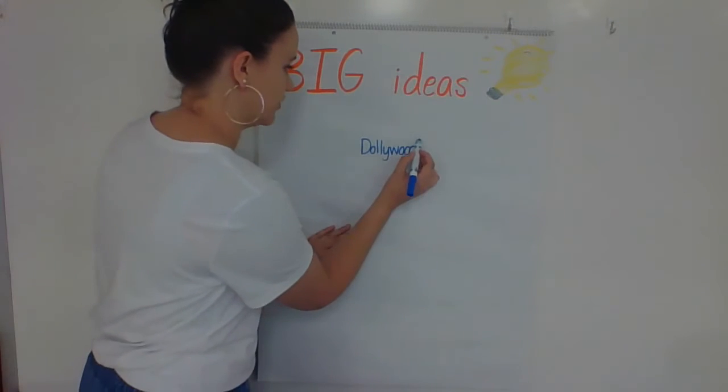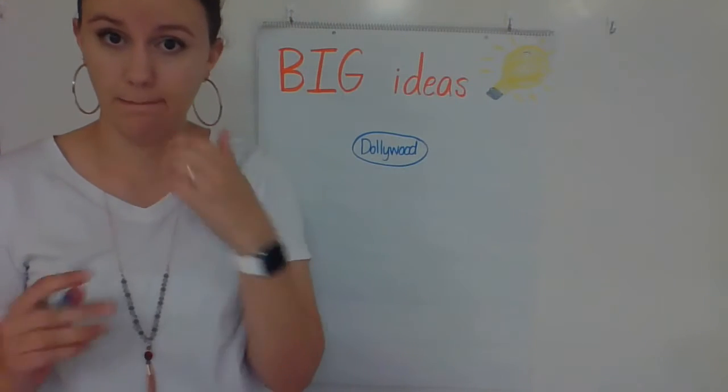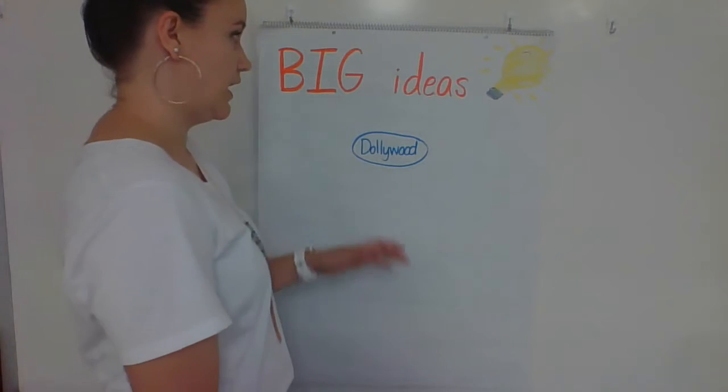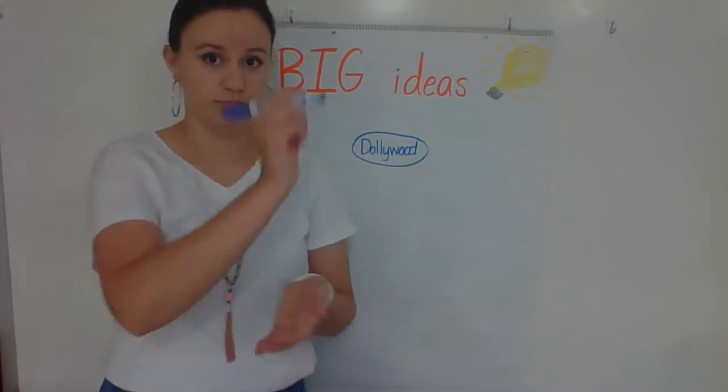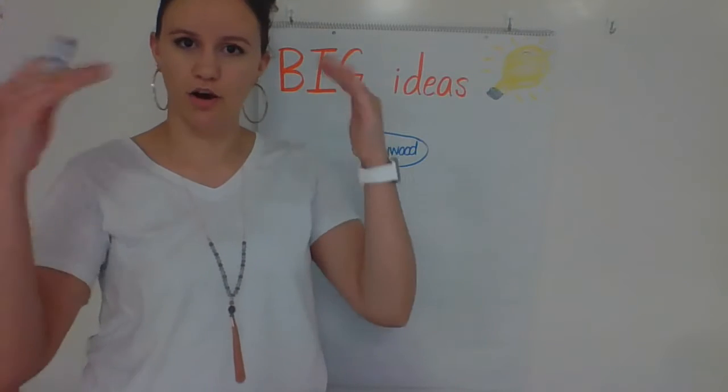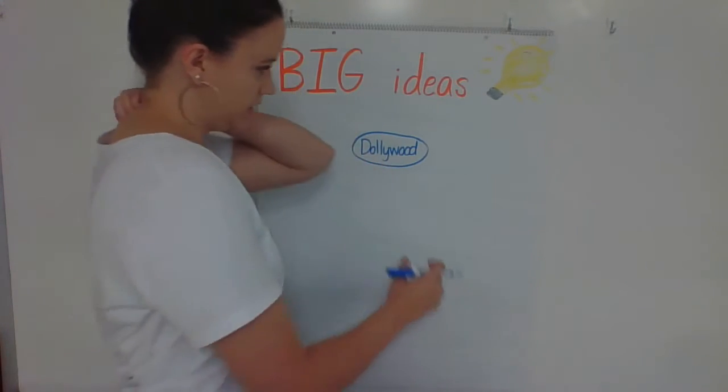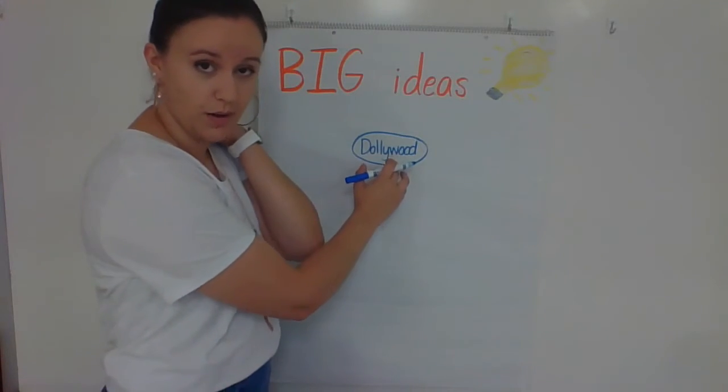Dollywood. That's my big idea. I'm going to circle it. Dollywood. Big idea. I went to Dollywood this weekend. Now, I could just make a plan and start writing all about Dollywood, but then it might be hard to organize. It might be hard to figure out what exactly I'm trying to write about. So, I'm going to do a web, a thinking web.